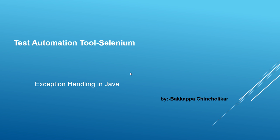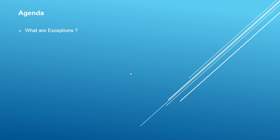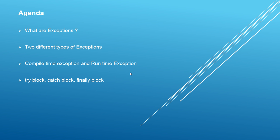Hey, hi everyone, this is Baka Pachinchulikar. Welcome back to Test Automation Tools Selenium. In today's video session we will discuss about exception handling in Java programming language. The agenda for the day is: what are exceptions, different types of exceptions, compile time exceptions and runtime exceptions, and what are try block, catch block, and finally block.